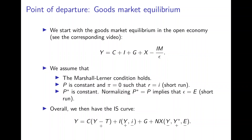The price level is constant and inflation is zero, so the real interest rate equals the nominal interest rate, which implies we are in the short run. The foreign price level P* is constant, and we normalize the foreign price level to equal the home price level, which implies that the real exchange rate and the nominal exchange rate are the same.